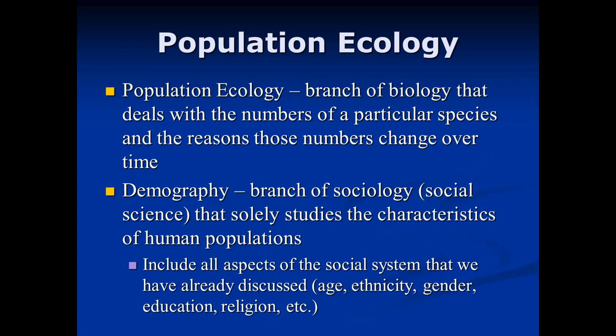I want to begin by talking about population ecology, a branch of biology — a natural science — that deals with the numbers of a particular species, any species, and why those numbers change over time. For example, biologists are currently looking at the population of the desert tortoise here in Nevada. Over the last 20 to 30 years, their numbers have been steadily declining, and a population ecologist would study why.